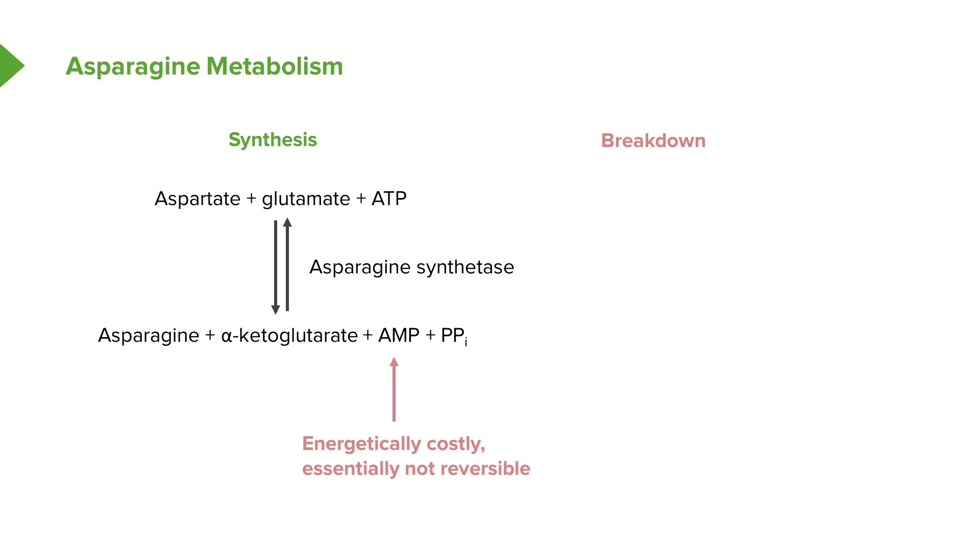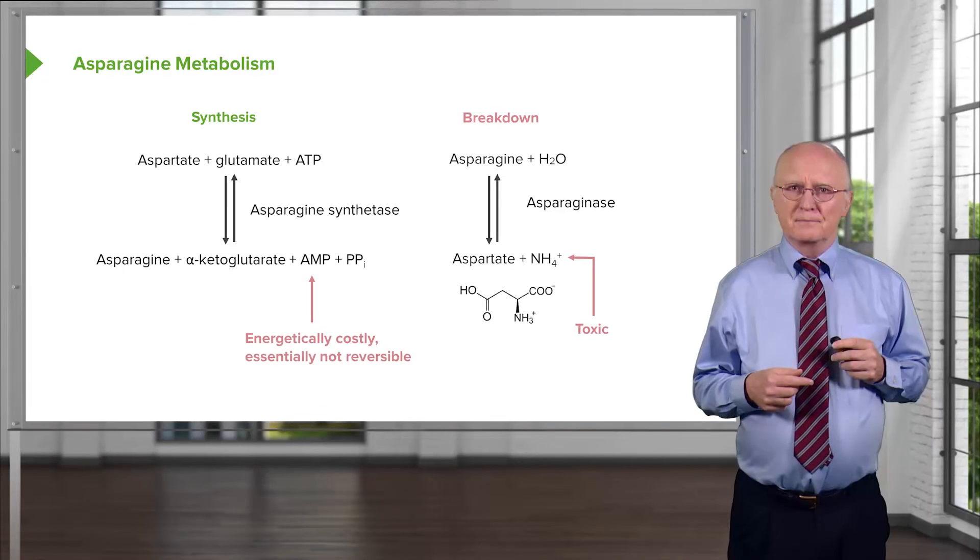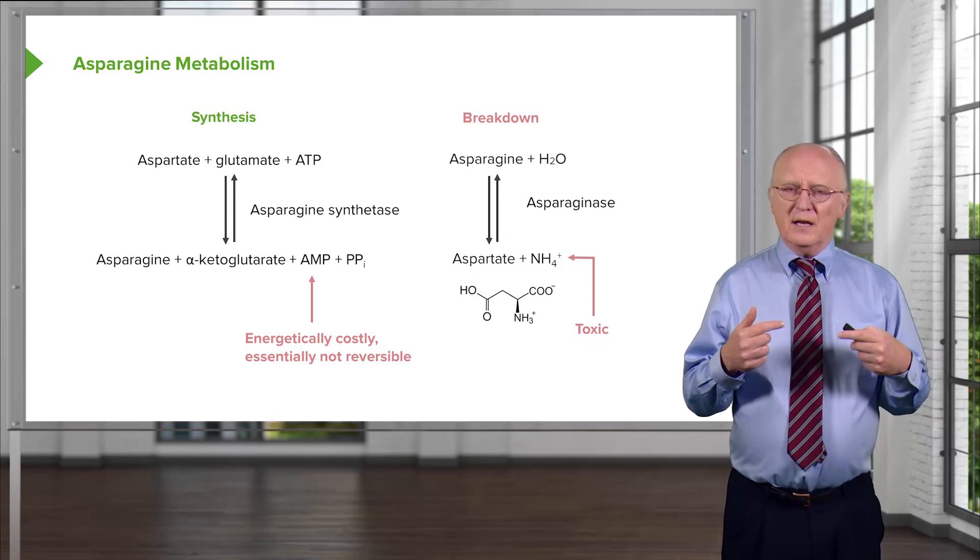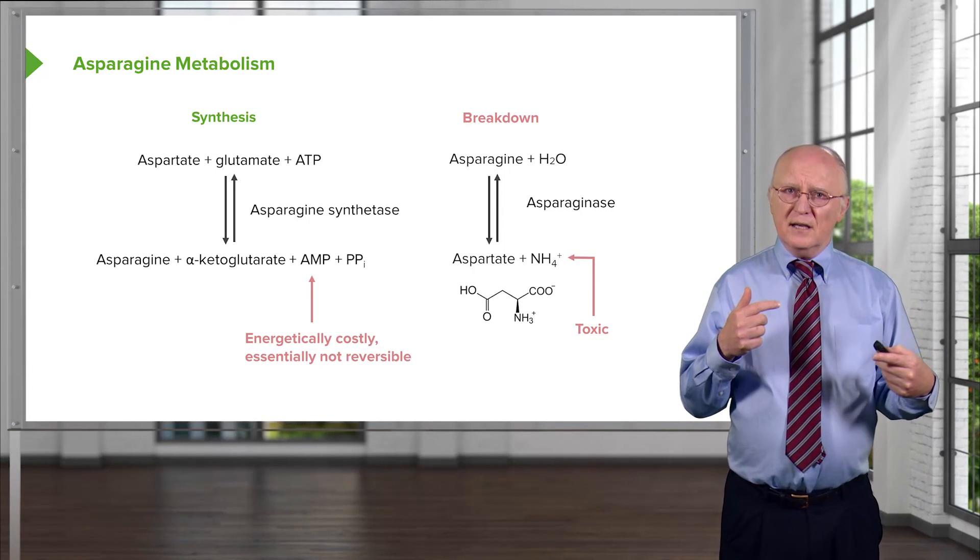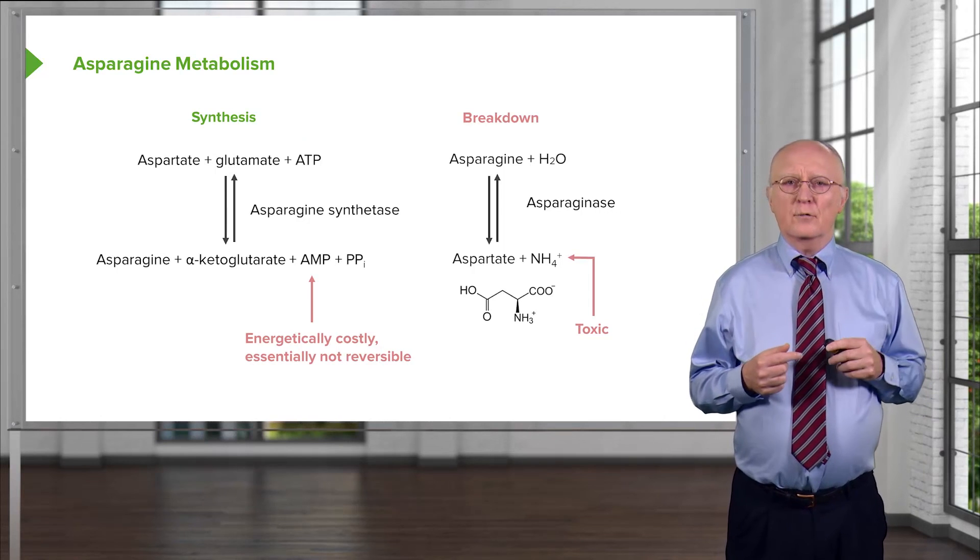So the other way, of course, of making aspartate and the much more common way of making aspartate from asparagine was by the breakdown of asparagine. That involved the use of water, production of aspartate, and the enzyme catalyzing that is known as asparaginase. This is the most common way that asparagine is broken down and the most common way that aspartate is produced from asparagine. We produce the ammonium ion in this process. Remember that's toxic and it will have to be gobbled up in another reaction.